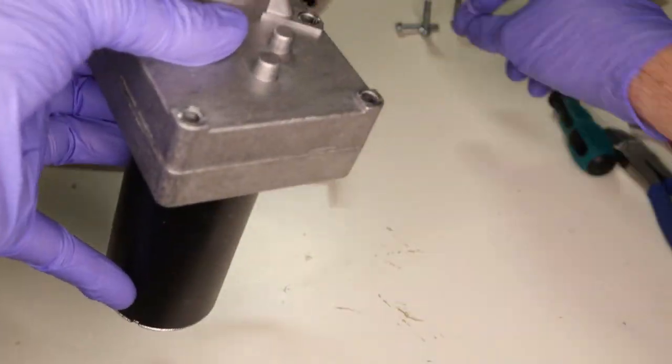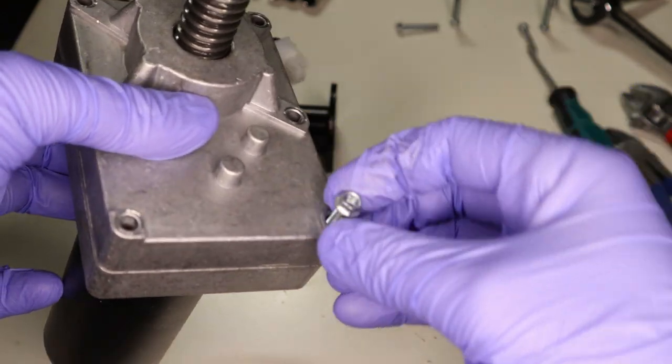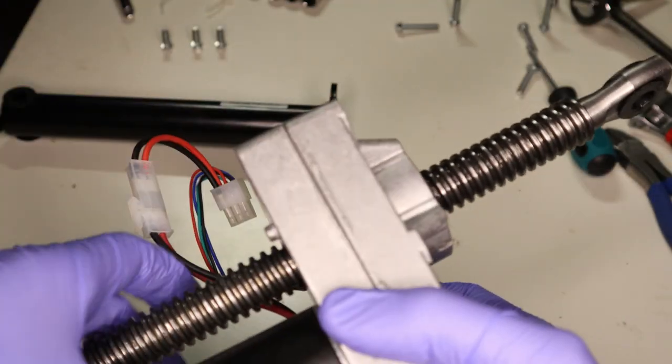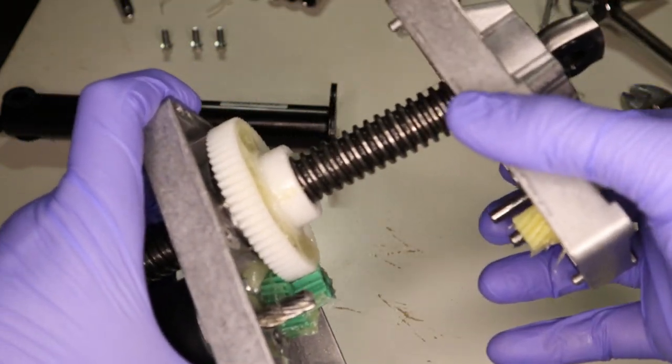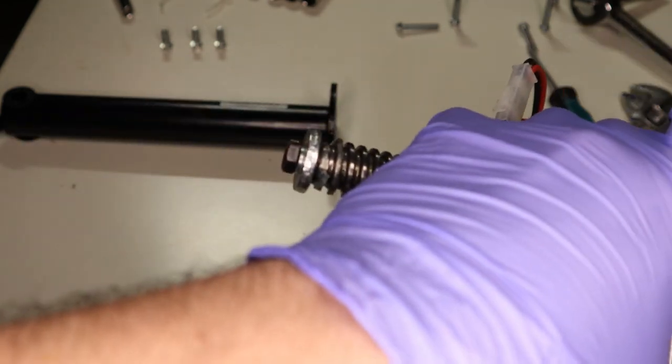I already took a lot of the screws out. There's just six machine screws in here, and then this whole assembly comes apart. I can't take it fully apart because this is on the end there and there's a bolt on the end there.